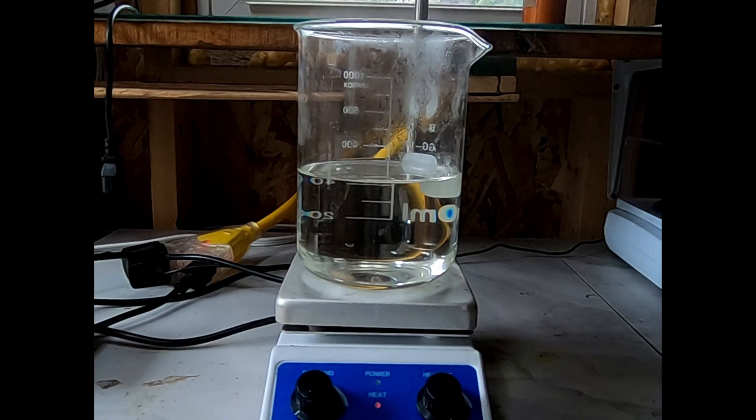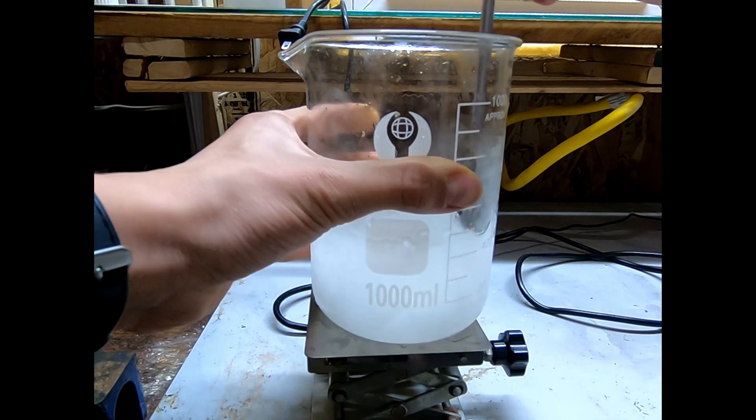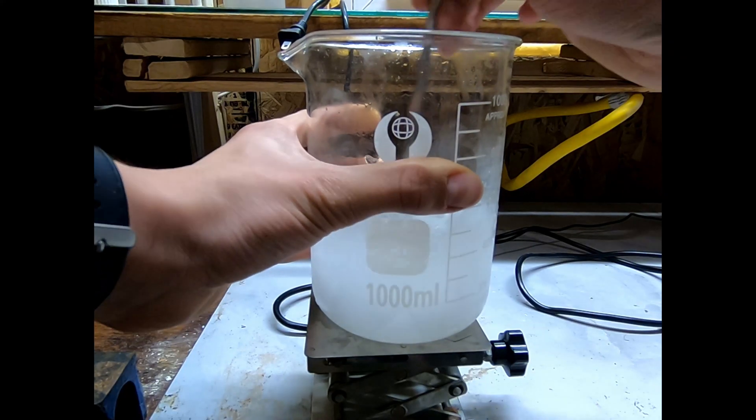Once that's done, I take it off the hot plate and place it in the fridge then the freezer overnight, which leaves me with some nice white crystals stuck in ice.